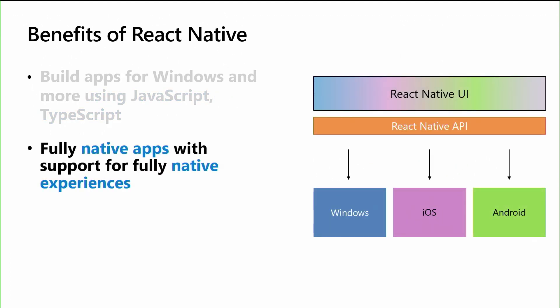You also have fully native apps running on your devices with fully native experiences. What you see here is a breakdown of a layer cake of how that works. You have your React Native UI, which is where your TypeScript or JavaScript sits and where you write all of your logic. That translates through a React Native API layer and then runs natively on the device you're targeting, whether that's iOS, Android, or Windows. In React Native for Windows, we're taking that React Native API layer, making it C++, making it really fast, and making it translate great for all of the devices you want to target — whether that's a desktop, a dual-screen device, or anything else we release.